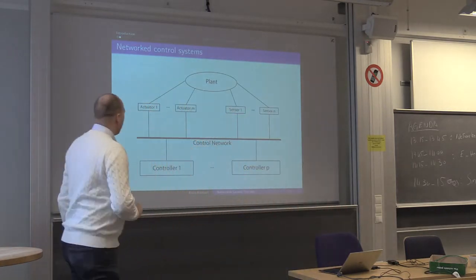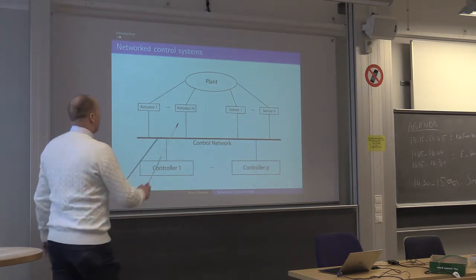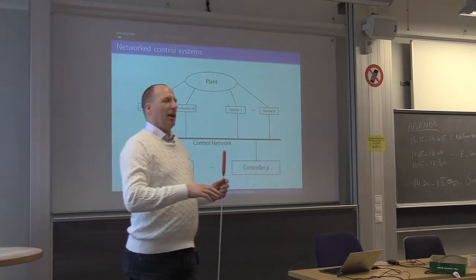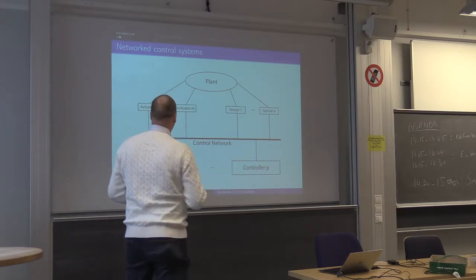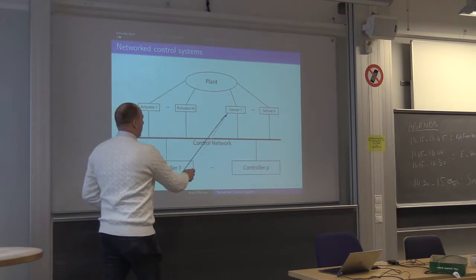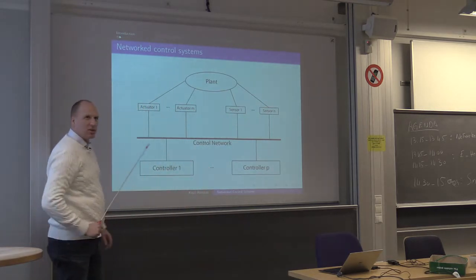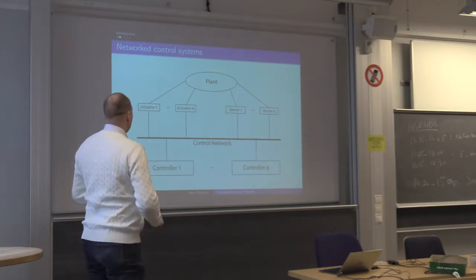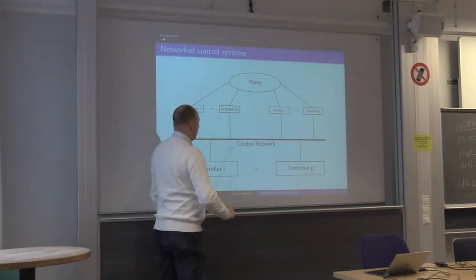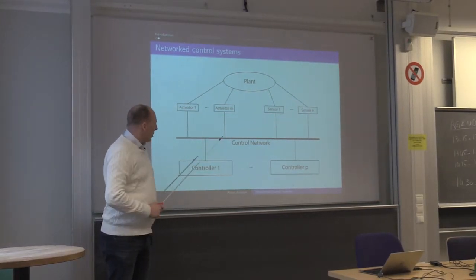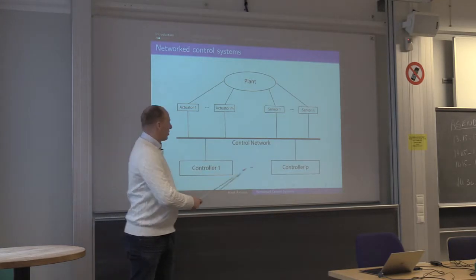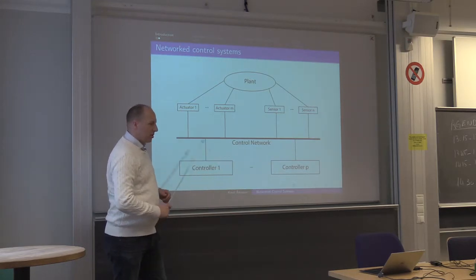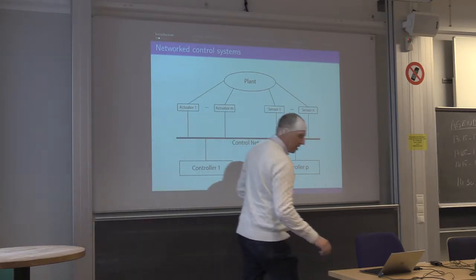To give you an overview of what this can look like: we have a plant to be controlled — this could be a car, a huge power plant, or a factory. Connected to that plant, you have a lot of different sensors and actuators; for example, motors controlling the vehicle if it's a car. All these sensors and actuators are hooked up to one or several different networks, and then you have different control algorithms running, with one or many different controllers.